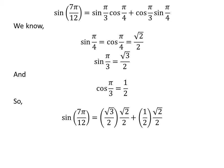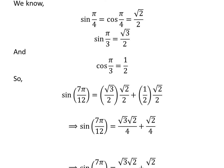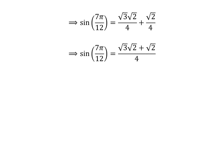Plugging these values into the equation gives us square root of 3 upon 2 times square root of 2 upon 2, plus one half times square root of 2 upon 2. Further simplification gives us sin of 7 times pi upon 12 is equal to square root of 3 times square root of 2 upon 4 plus square root of 2 upon 4. Adding the fractions and taking out the common factor square root of 2 in the numerator gives us sin of 7 times pi upon 12 is equal to square root of 2 times open bracket square root of 3 plus 1 close bracket upon 4.